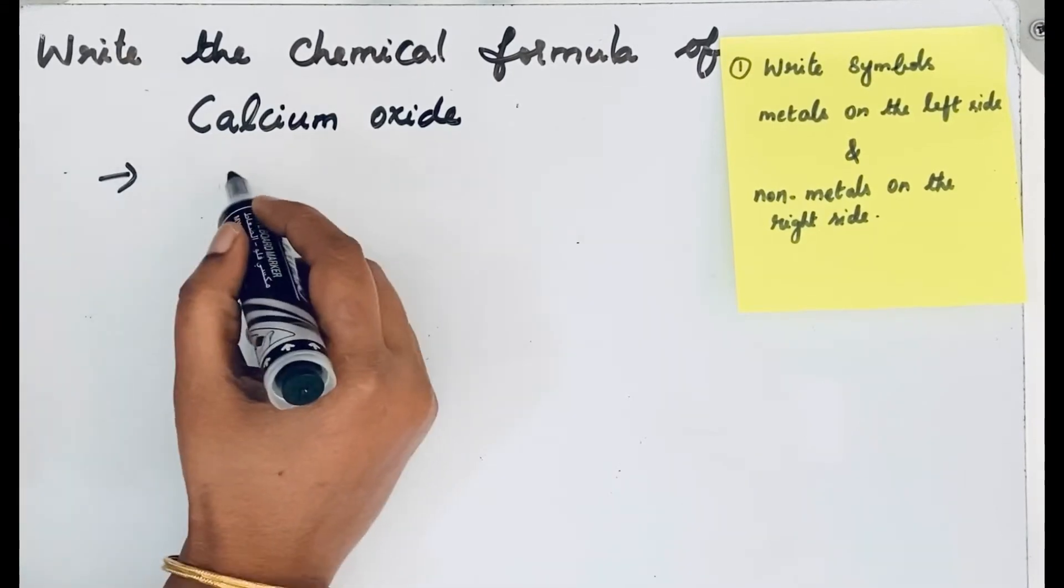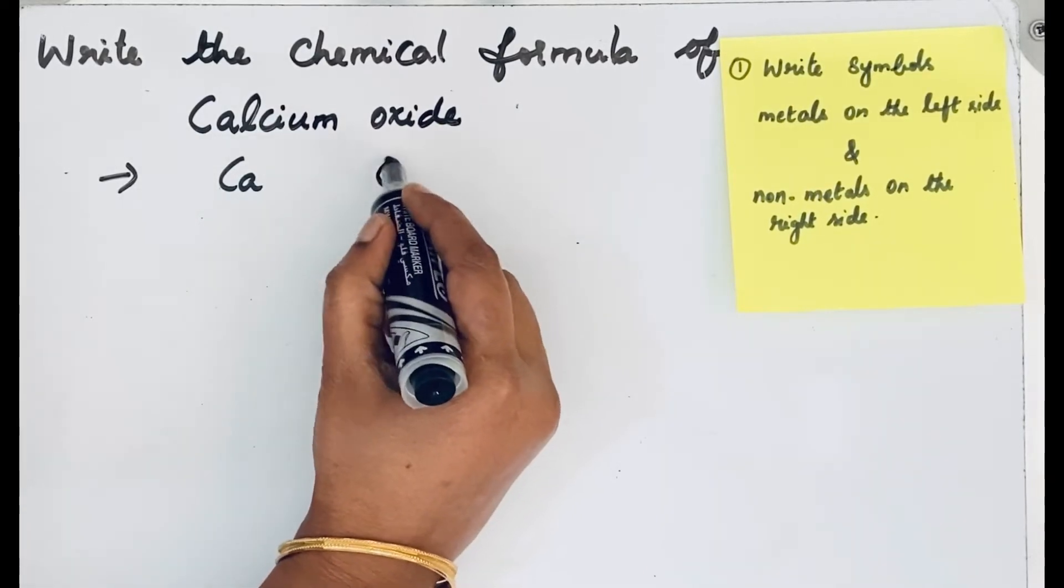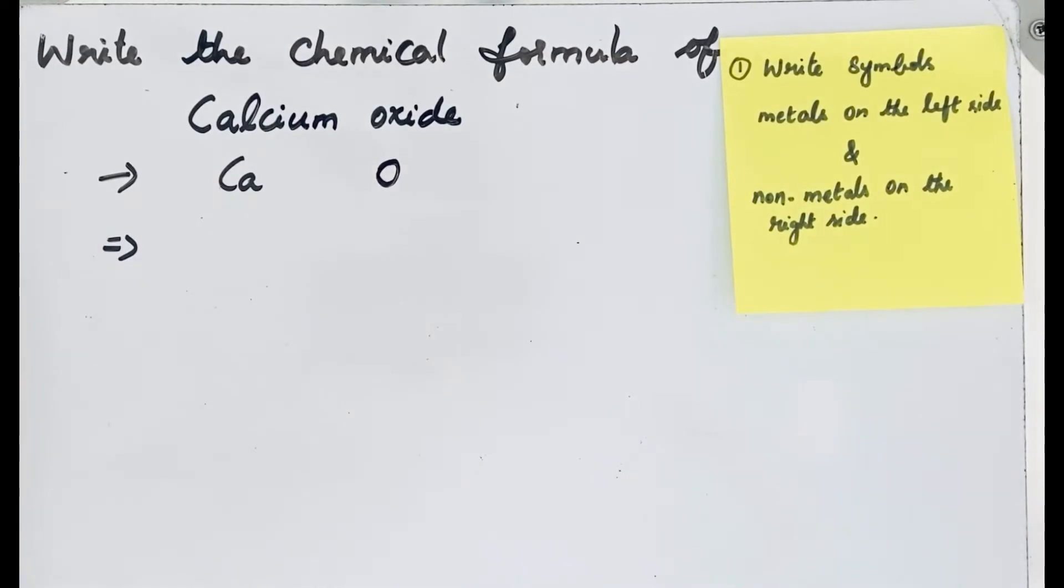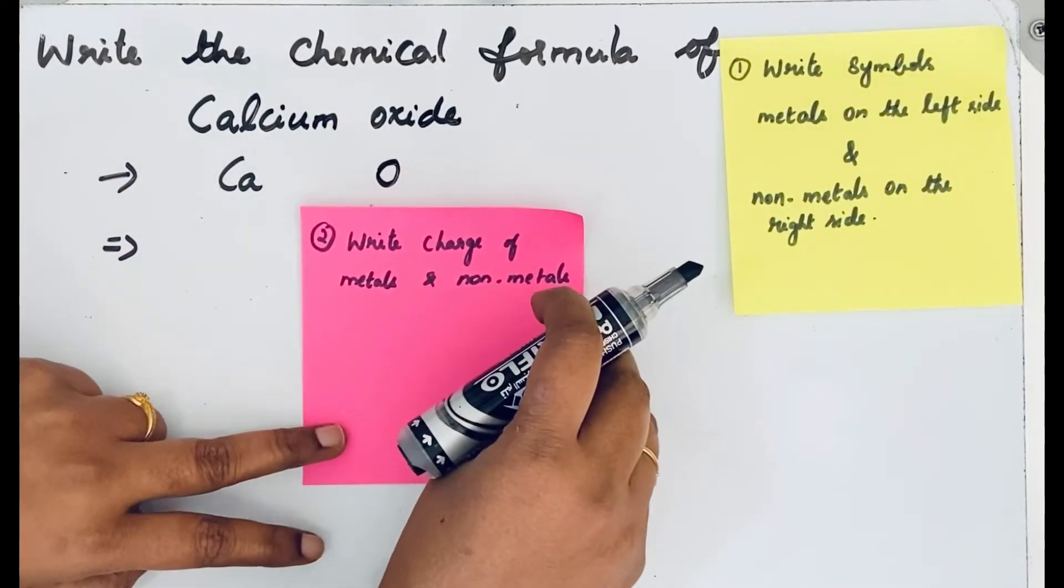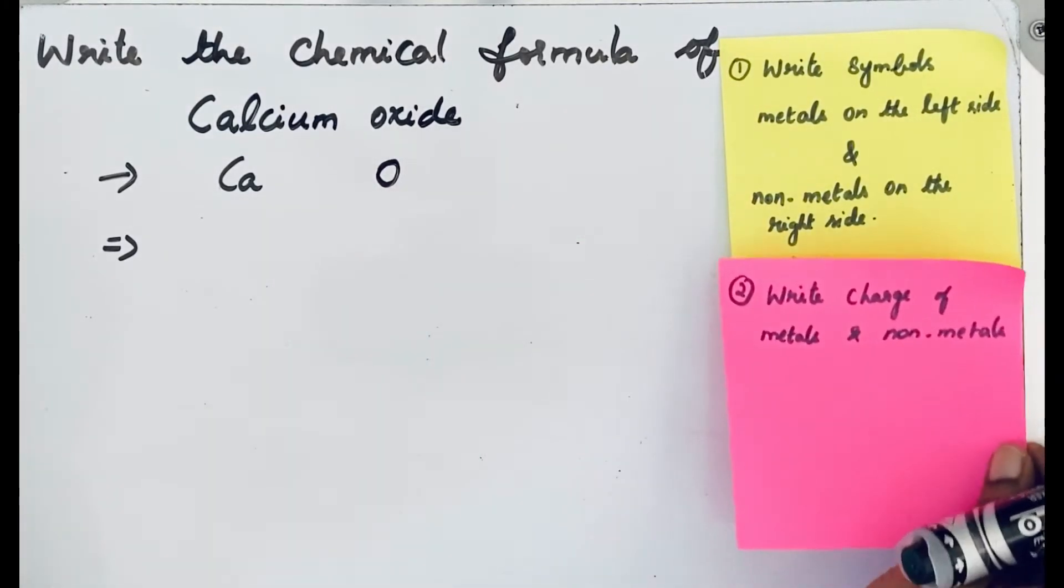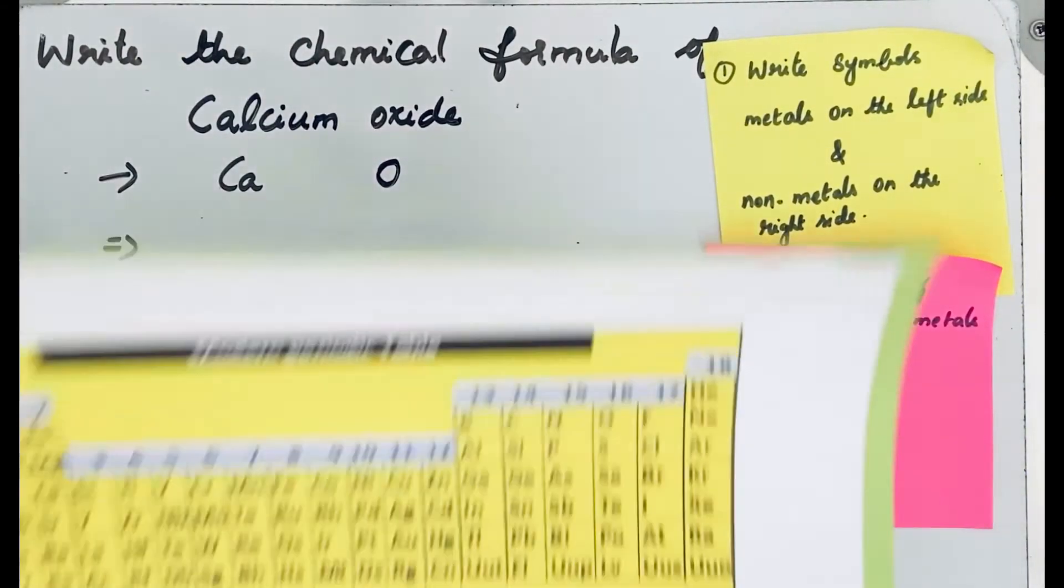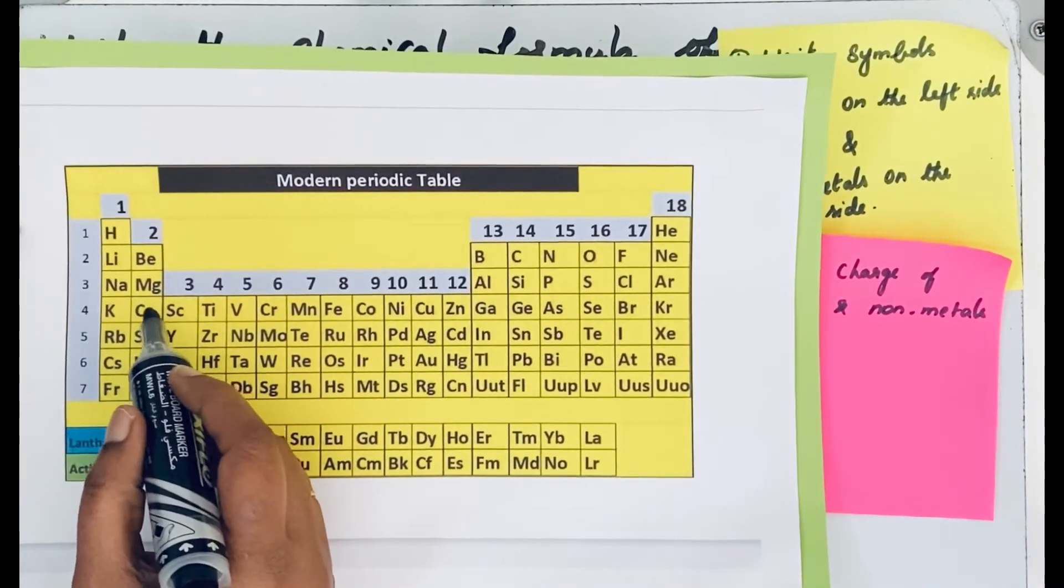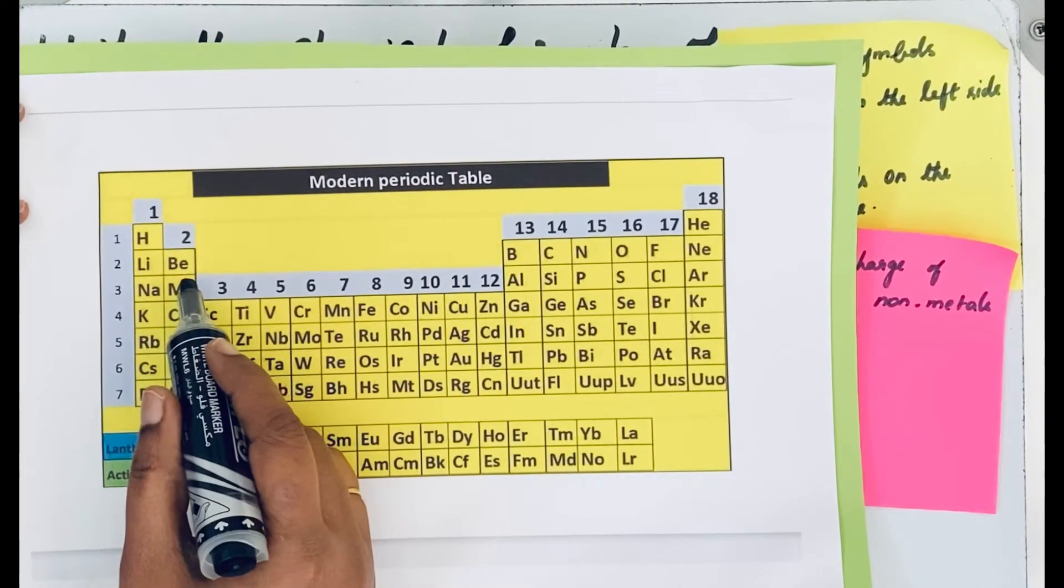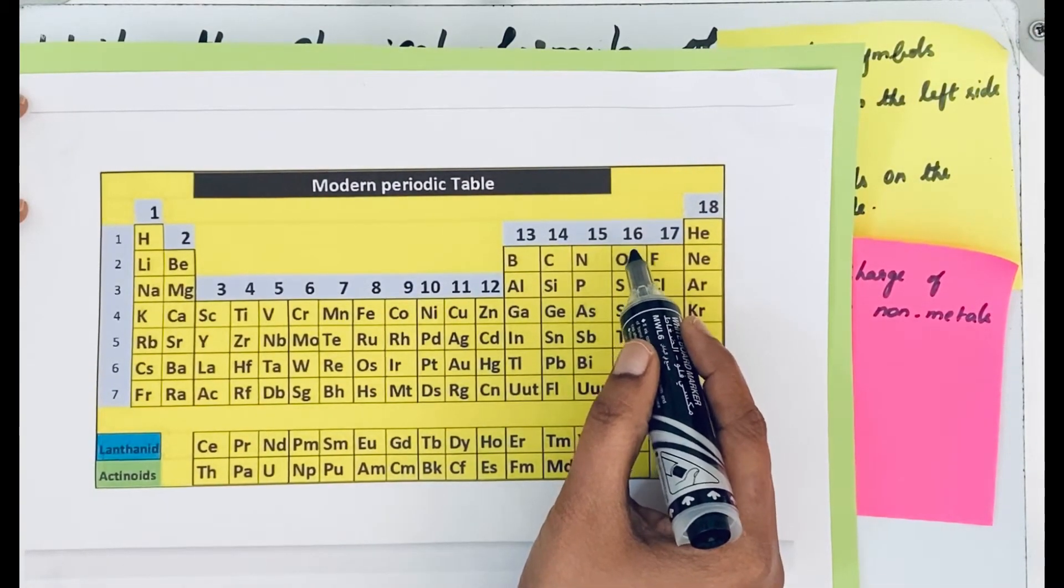The second step is to write the charge of metals and non-metals. This is an ionic compound, so we are writing the charge. How do we know the charge? See the periodic table. Calcium is in the second group, so it forms 2+ charge. Oxygen is in the 16th group, so it produces 2- charge. Let us write the charges: 2+ and 2-.